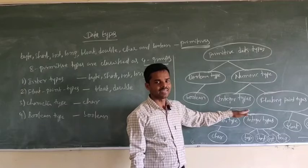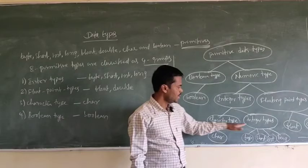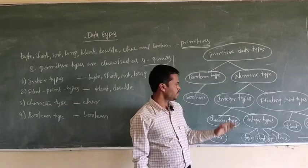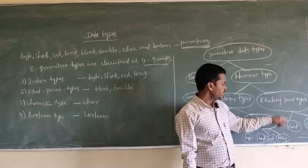This is the diagrammatic representation of data types. Java supports 8 primitive data types, which are mainly classified into 2 types: boolean type and numeric type. Boolean type contains only the boolean data type. Numeric type is classified into integer type and floating point type, both being numbers. Integer type is further divided into character type and integer type — byte, short, int, and long. Floating point types are float and double. Now we are going to discuss each data type in detail one by one.